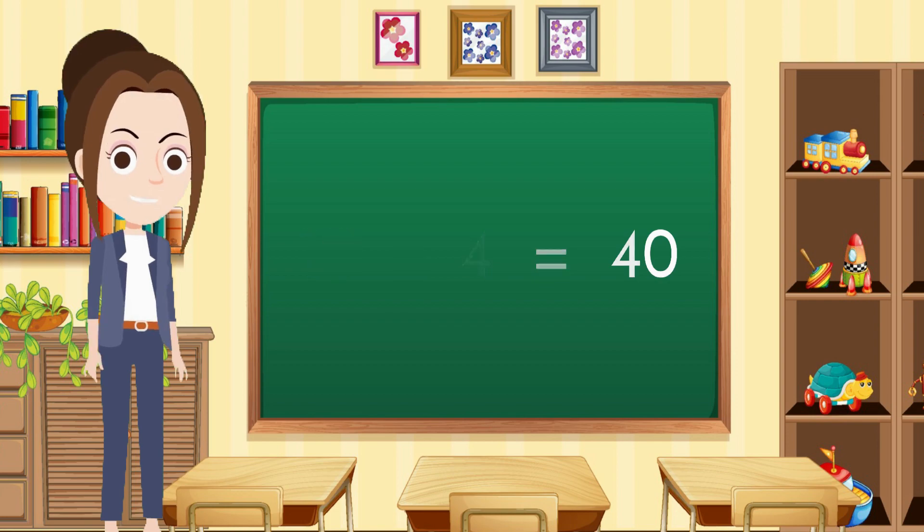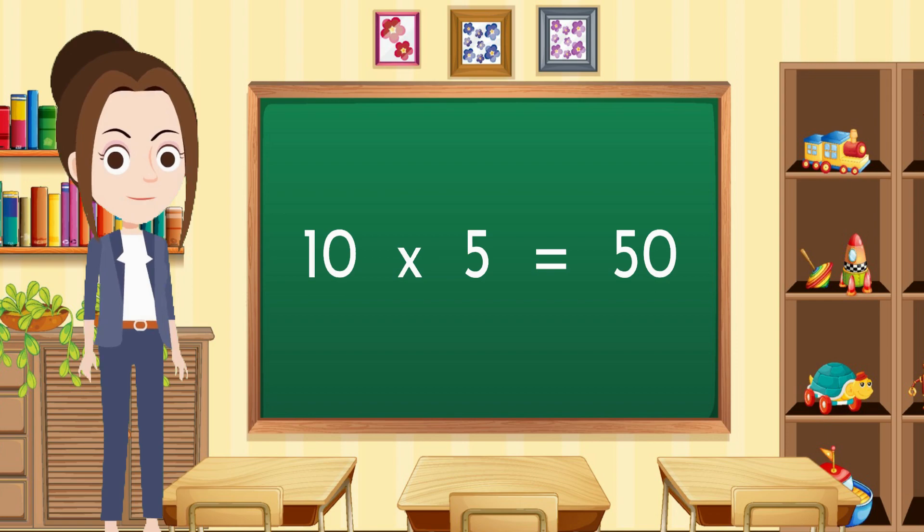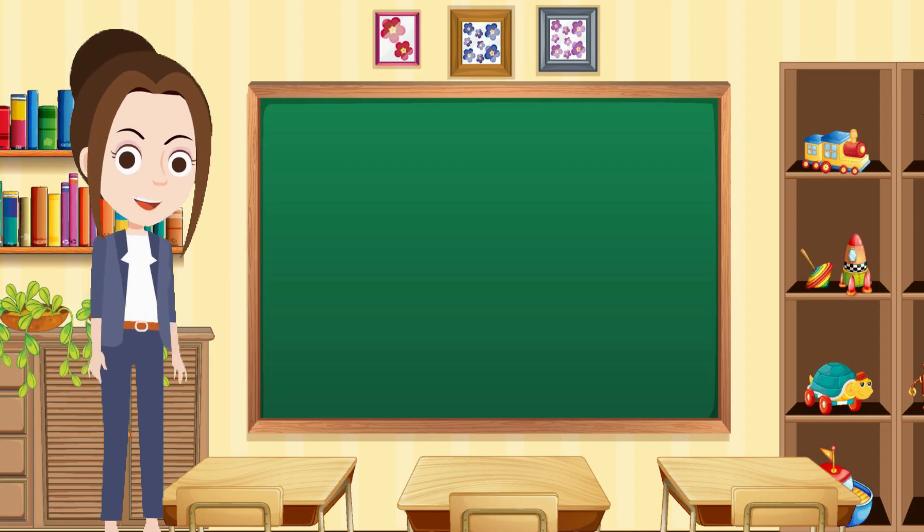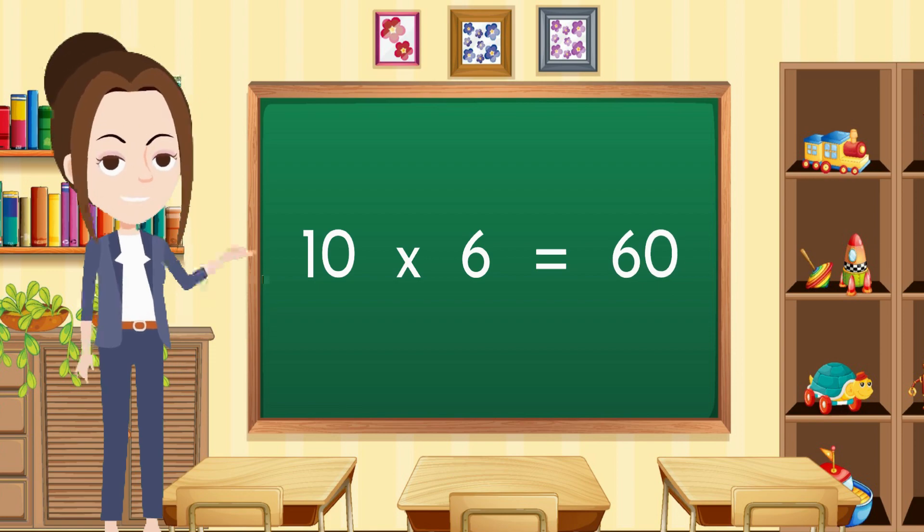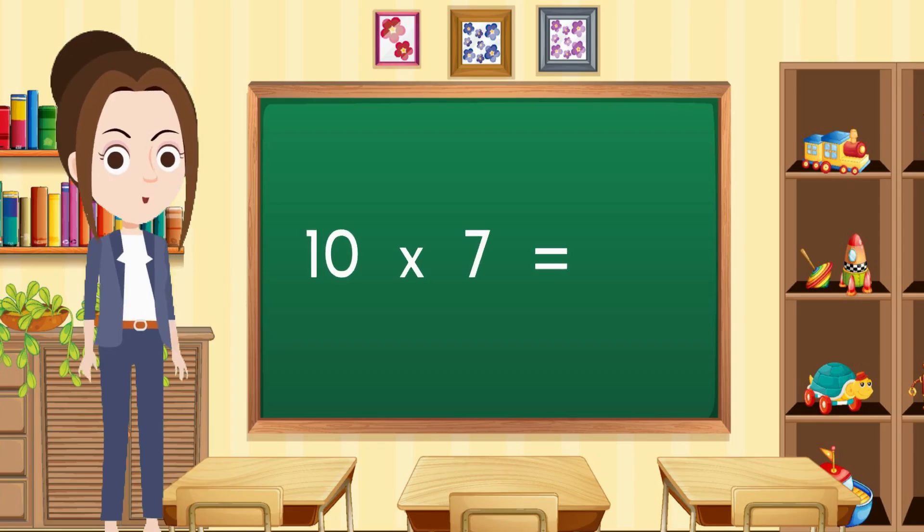10 fours are 40. 10 fours are 40. 10 fives are 50. 10 fives are 50. 10 sixes are 60. 10 sixes are 60. 10 sevens are 70.